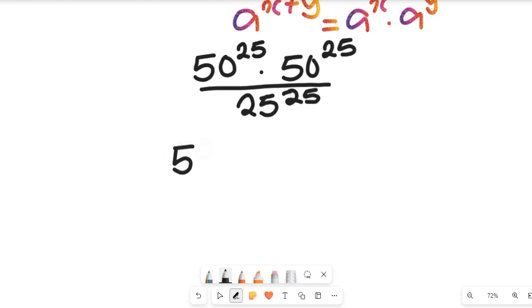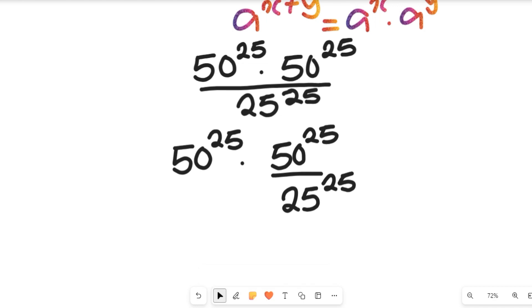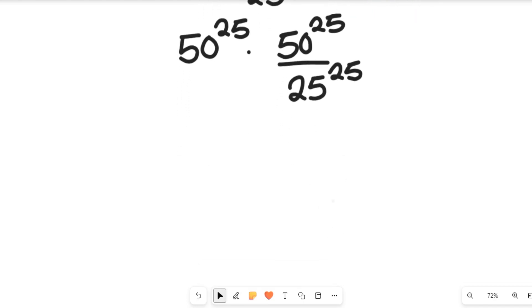This will become 50 to the power of 25 multiplied by 50 to the power of 25 divided by 25 to the power of 25. I only separated those expressions. I did not change anything.